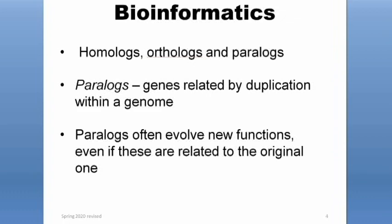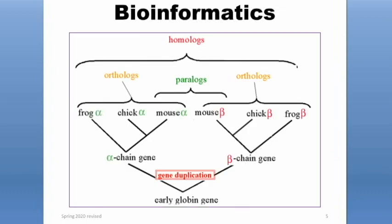Paralogs are genes related by duplication within a genome. Homologs is the umbrella term that covers both orthologs and paralogs. So as long as genes are similar in sequence, they are considered homologs.